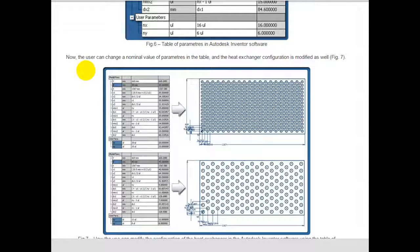Now the user can change a nominal value of parameters in the table and the heat exchanger configuration is modified as well. For example, you can see diameter 30, here is 30 diameter of pipe, then number x is 20, and number y is 15.